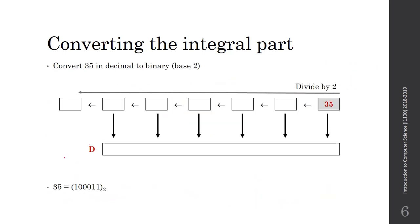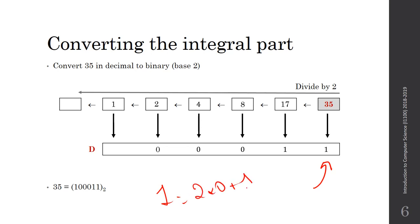Let's take an example: we have 35 and want to find its representation in base 2. 35 ÷ 2 = 17 remainder 1. 17 ÷ 2 = 8 remainder 1. 8 ÷ 2 = 4 remainder 0. 4 ÷ 2 = 2 remainder 0. 2 ÷ 2 = 1 remainder 0. 1 ÷ 2 = 0 remainder 1. So the number in binary is 100011.